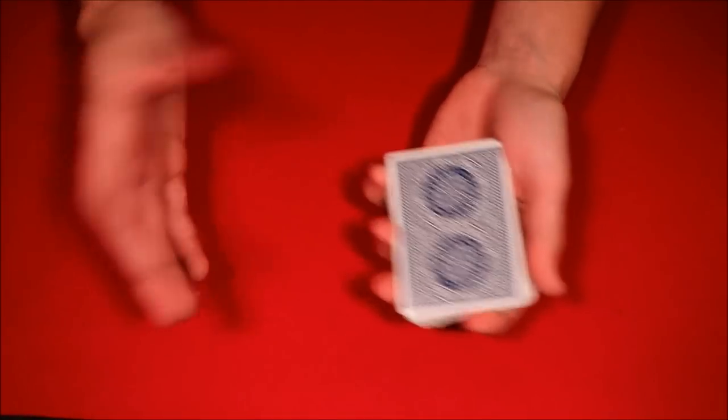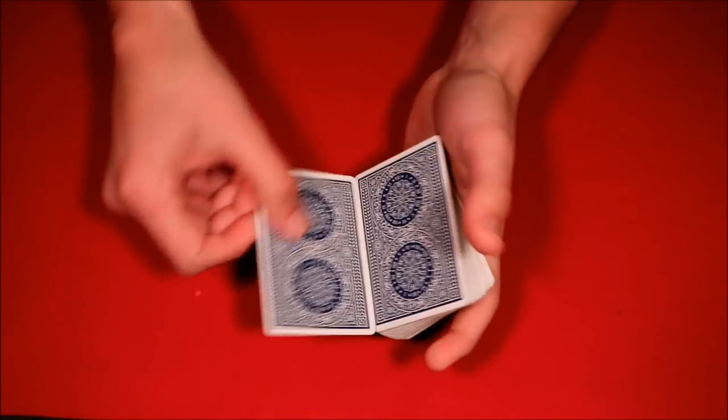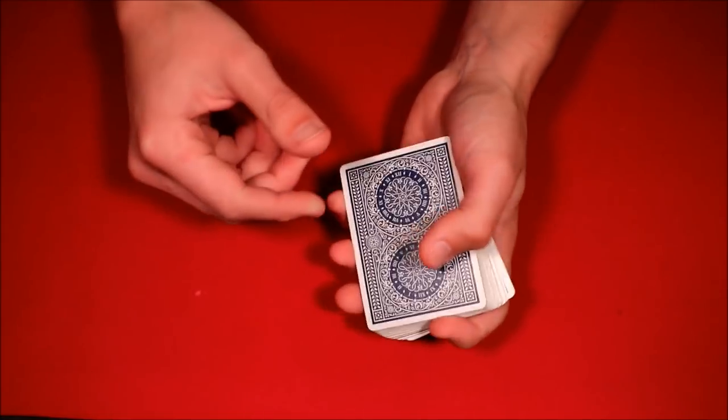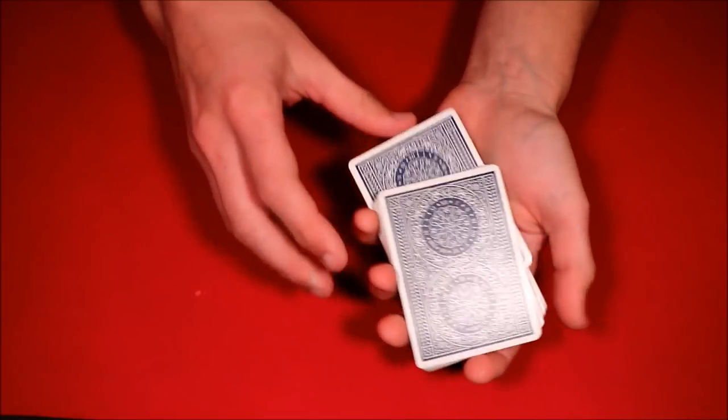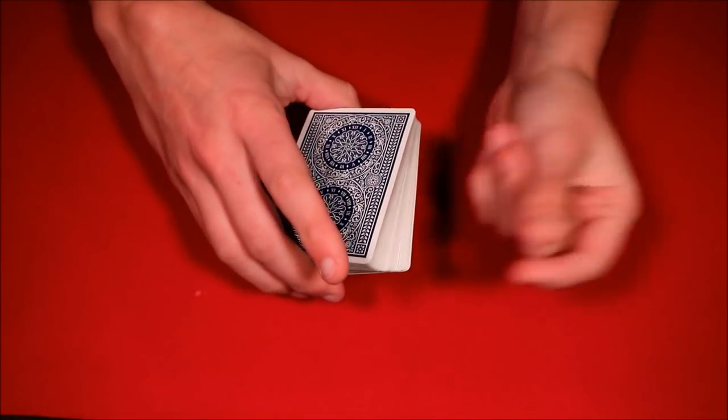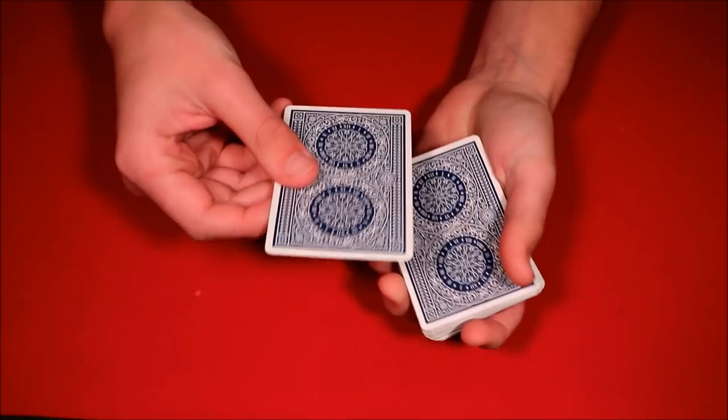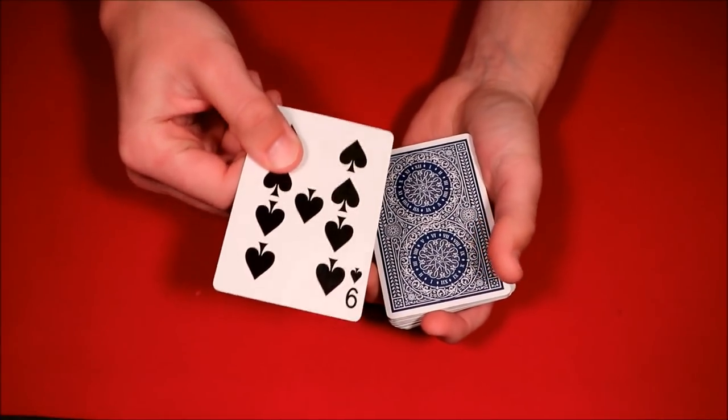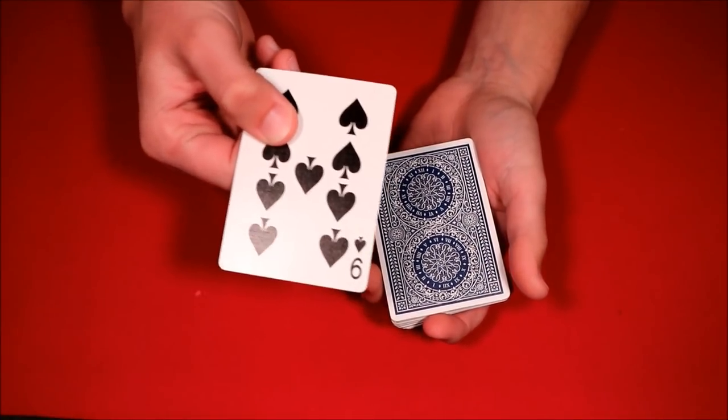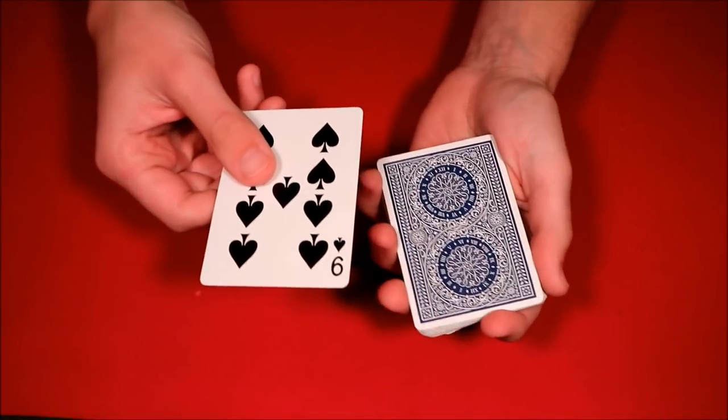So in essence, let's say you want to do a double lift but you ended up doing a triple lift. So what you could do in this case, let's say you have the king of spades, you do a triple lift, you put this into the middle, and then what happens is let's say you snap your fingers and you didn't realize that you did a triple lift and you flip over the card and this isn't the spectator's card, obviously.